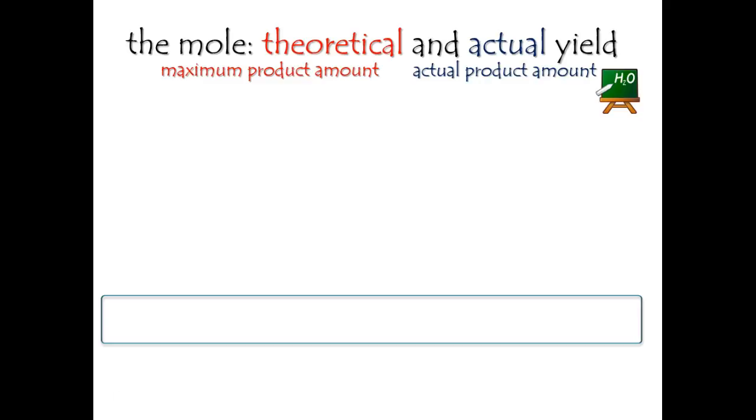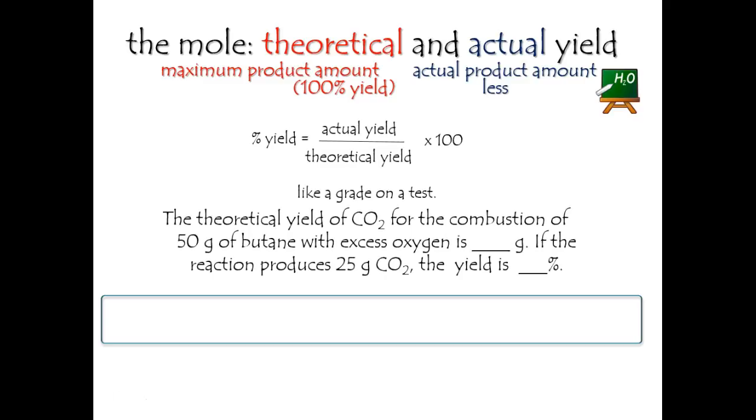A nice way to learn this is to get a sort of an emotional response to it. You might feel if the yield is lousy or awesome, just like your grade on a test might be lousy or awesome. So it means 100% yield for the theoretical, usually less for the actual yield. That's not always true. It can be more.